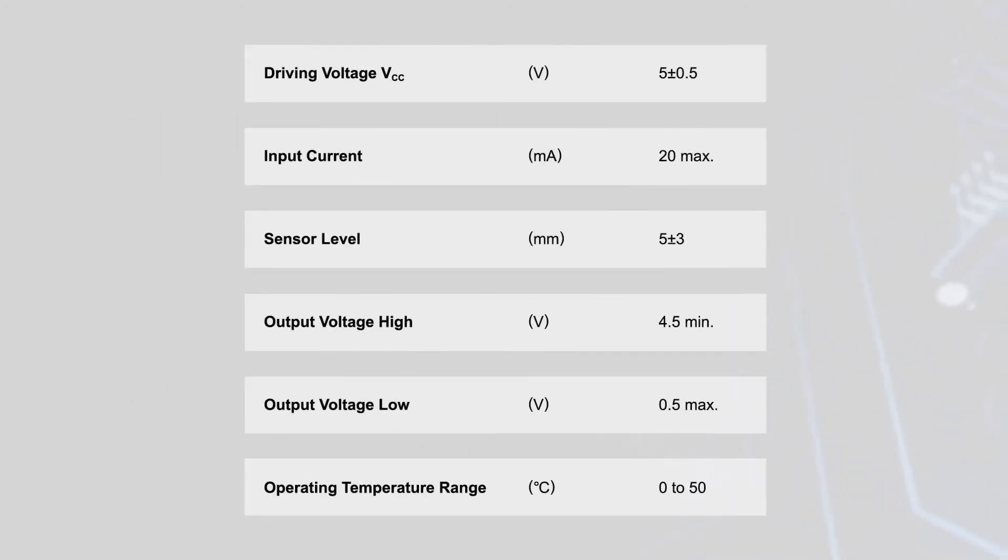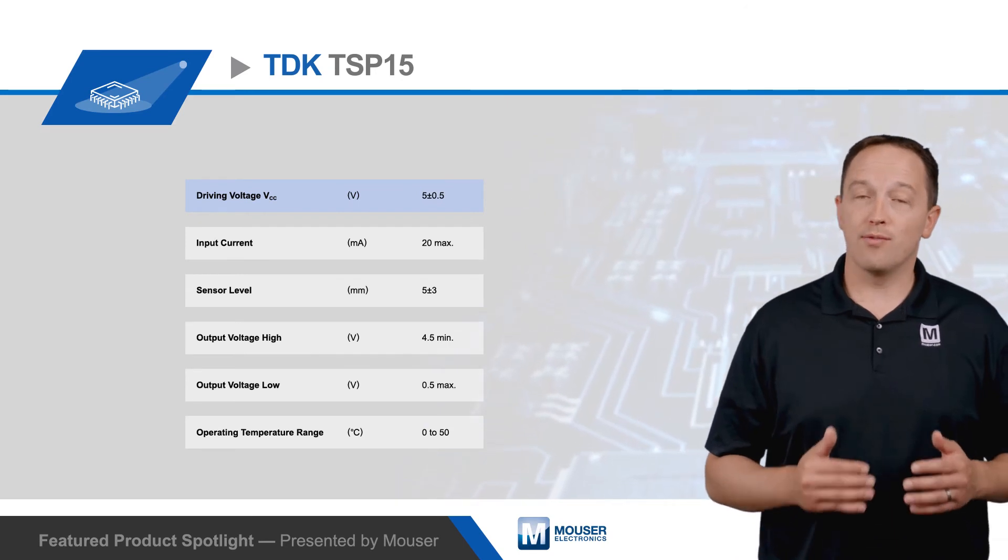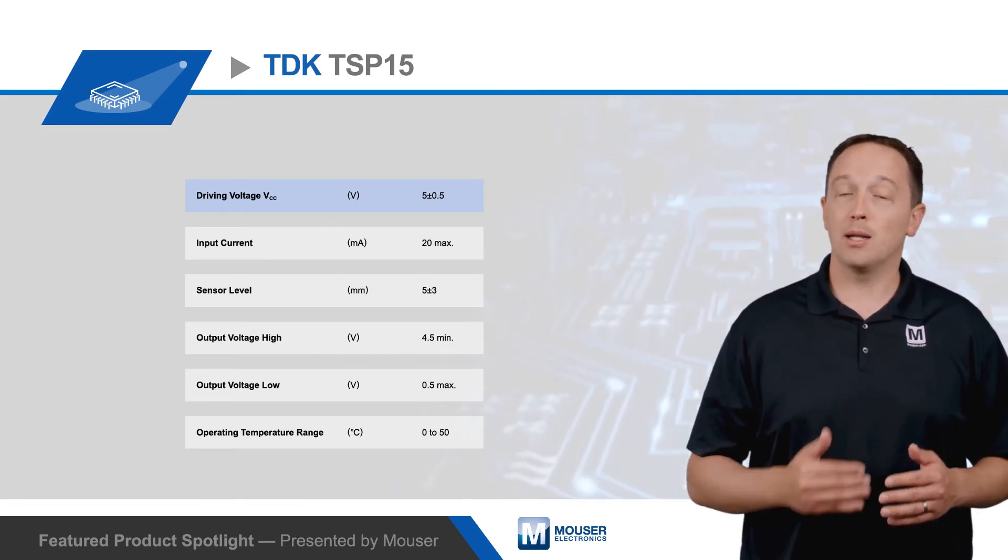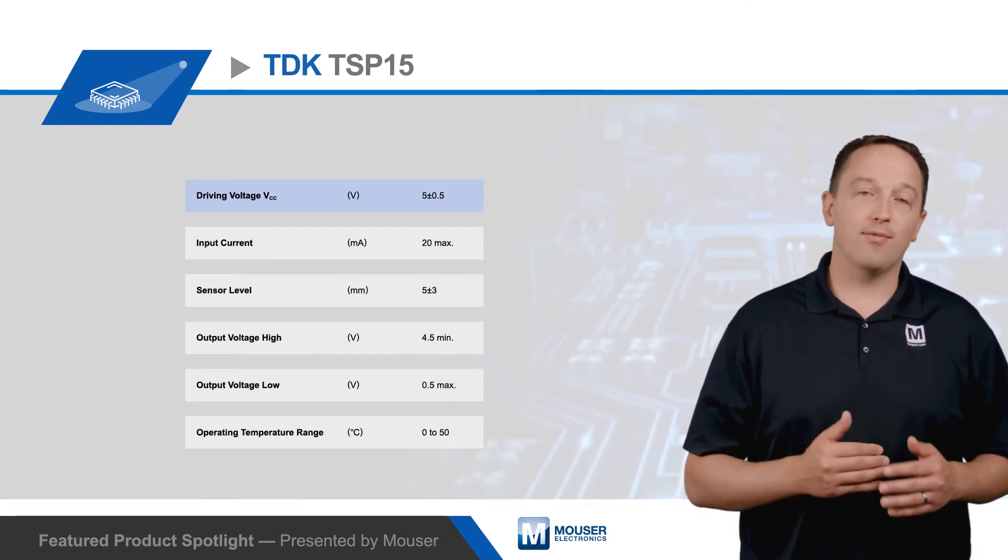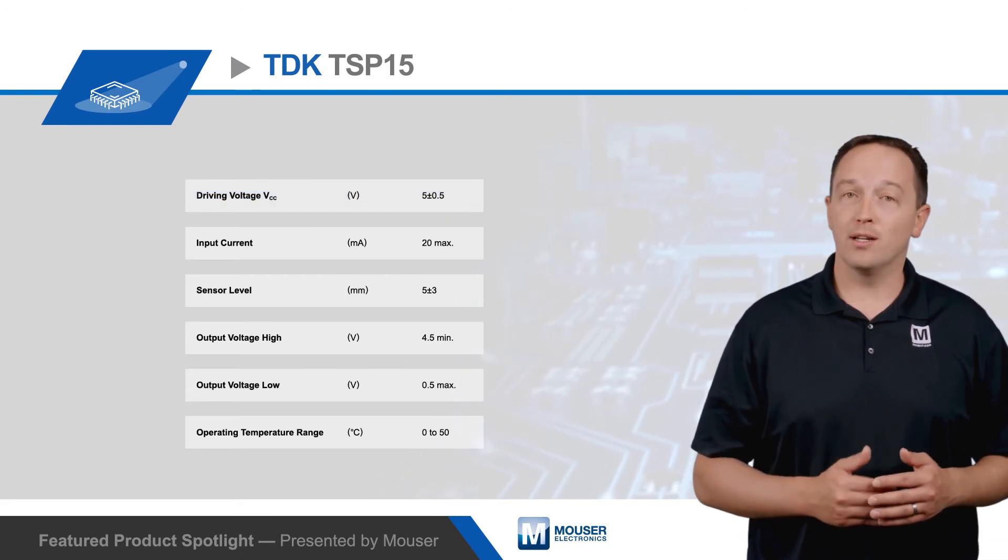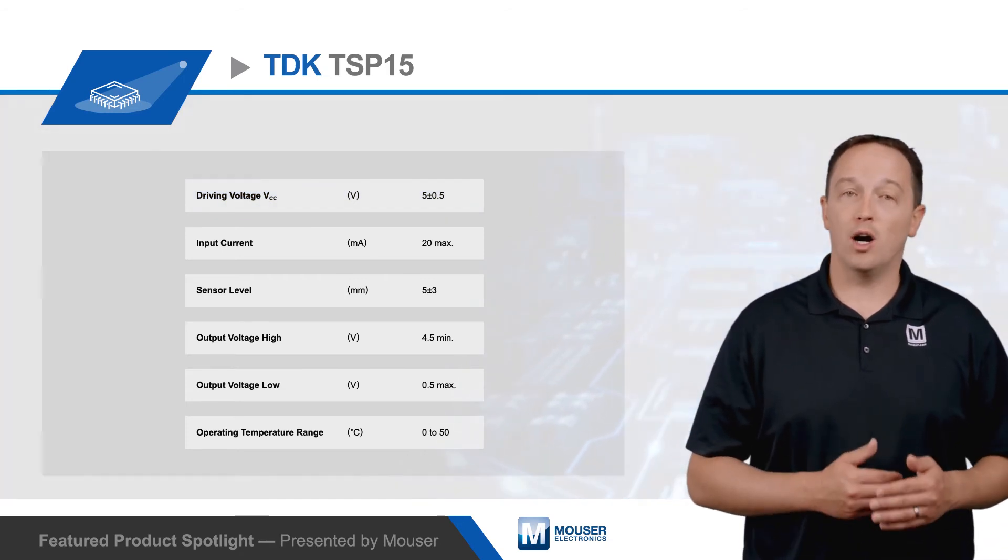The TSP15D series sensors offer an integrated ASIC that provides driver and detection functions to simplify the design and minimize component count. The sensor requires only a 5V 20mA supply and a pull-up resistor, and it provides a 5V logic output to the host that indicates whether or not powder is detected on the sensor face.